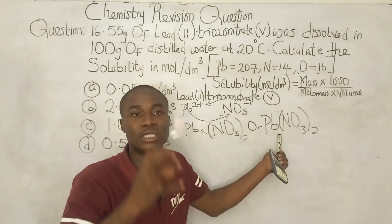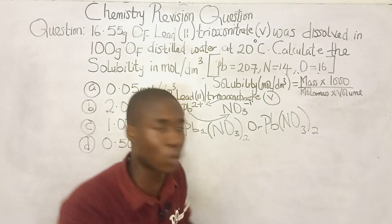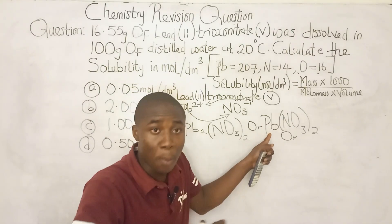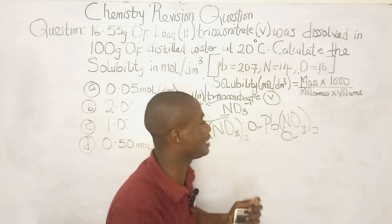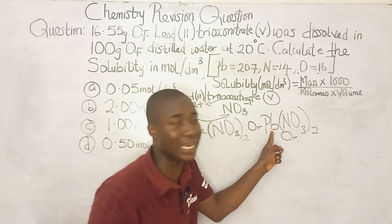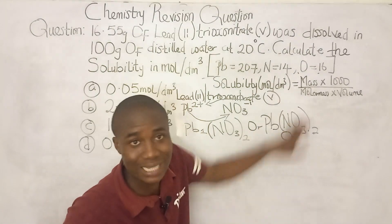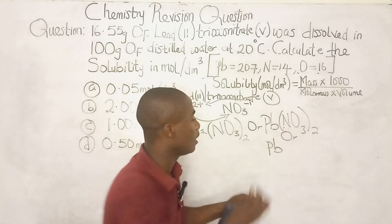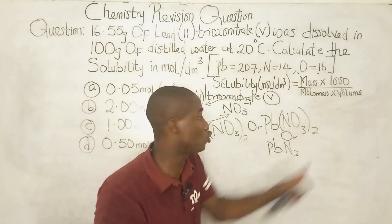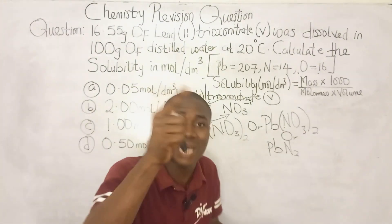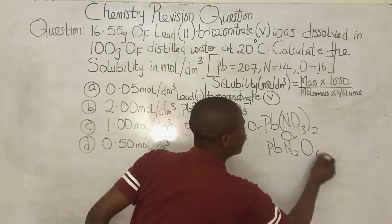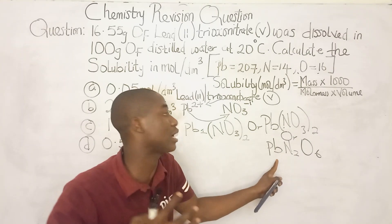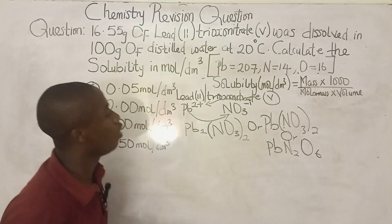We can expand Pb(NO₃)₂ for easier molar mass calculation. The 2 outside the bracket affects only what is inside. So we get: Pb, then 2×N giving N₂, and 2×3 oxygen atoms giving O₆. Therefore Pb(NO₃)₂ can be written as PbN₂O₆.